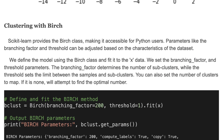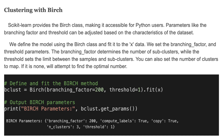Scikit-learn provides the Birch class, making it accessible for Python users. Parameters like the branching factor and the threshold can be adjusted based on the characteristics of the dataset. We define the model using the Birch class and fit it to the X data. The branching factor determines the number of sub-clusters, while the threshold sets the limit between the samples and sub-clusters.